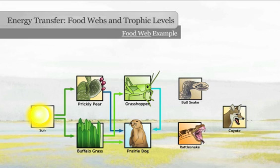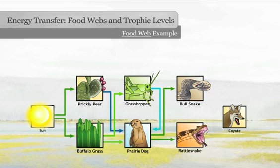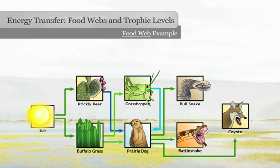Prairie dogs are, in turn, eaten by bull snakes, rattlesnakes, and coyotes. Coyotes have a varied diet including bull snakes, prairie dogs, and the fruit of prickly pear cactus.